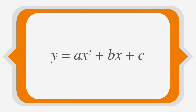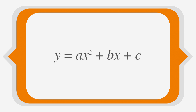Let's look at the standard form of a parabola: y equals ax squared plus bx plus c. In this equation, a is the coefficient of x squared, or what x squared is multiplied by; b is the coefficient of x, or what x is multiplied by; and c is the constant term — it's a number, not a variable.